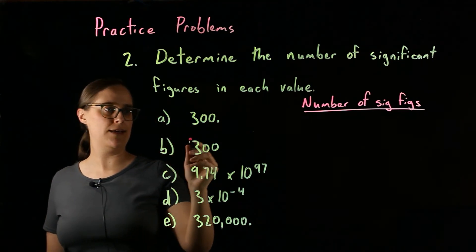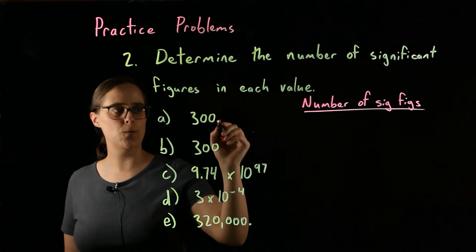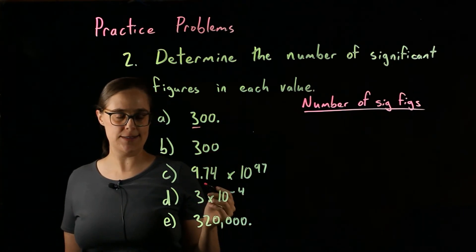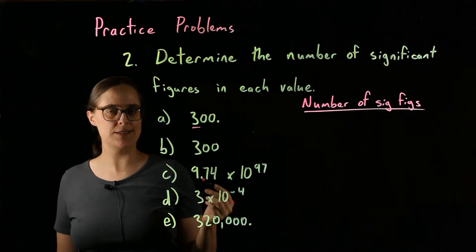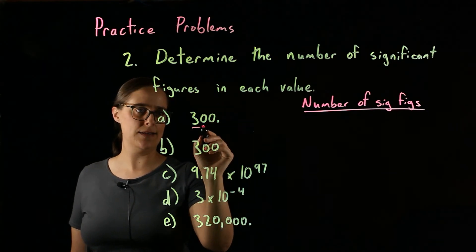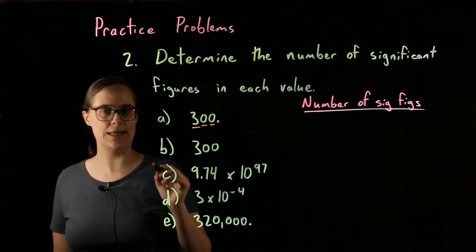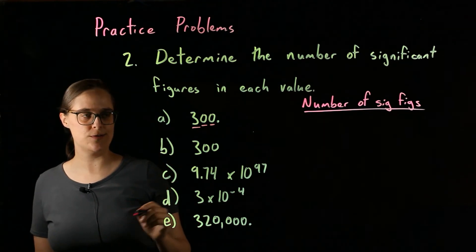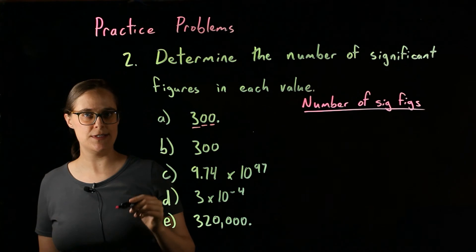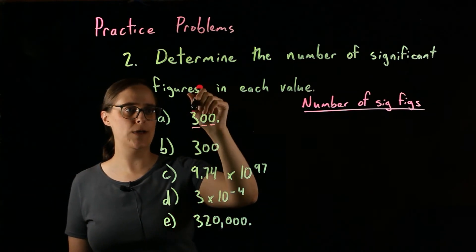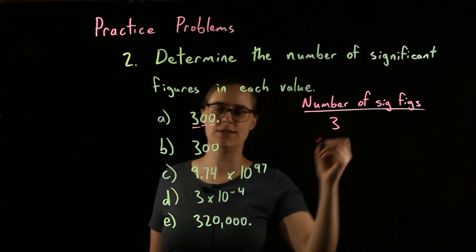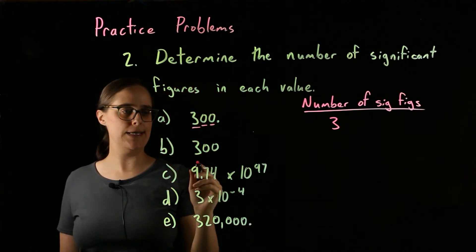Problem A: 300 with an actual decimal point at the end. The 3 is significant because it's a non-zero number. The decimal point at the end means the zeros at the end are also significant. All three digits are significant — one, two, three — we have three significant figures.